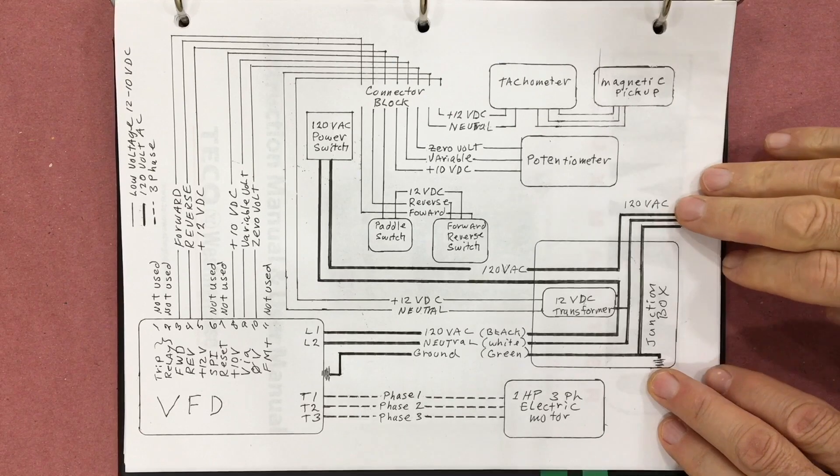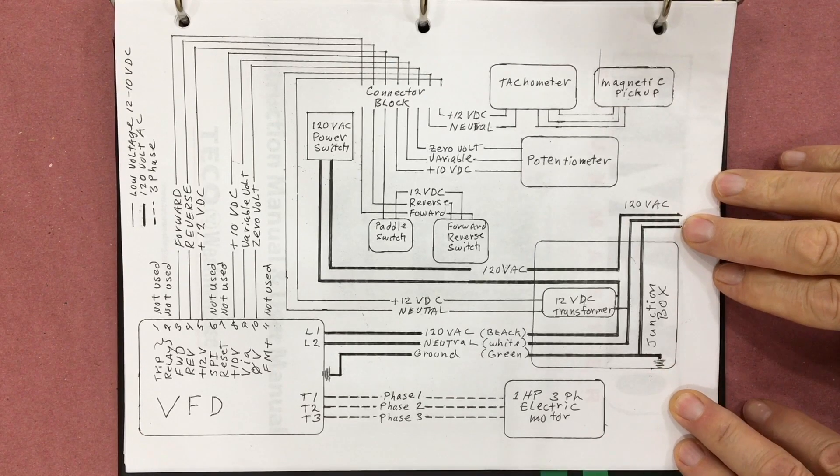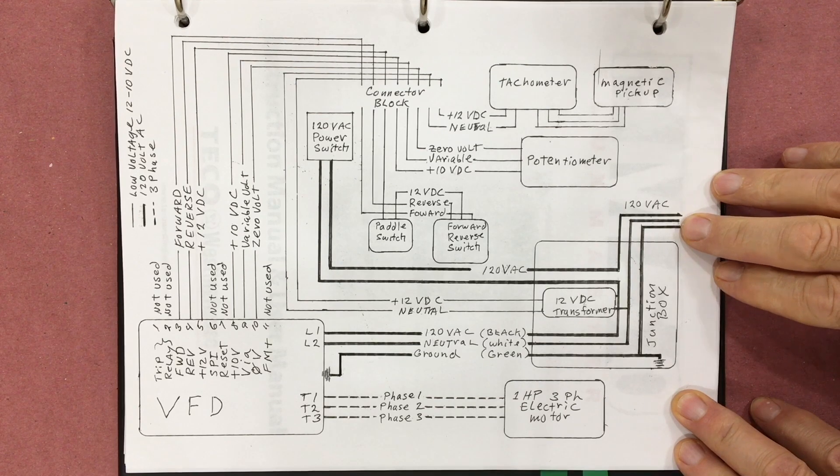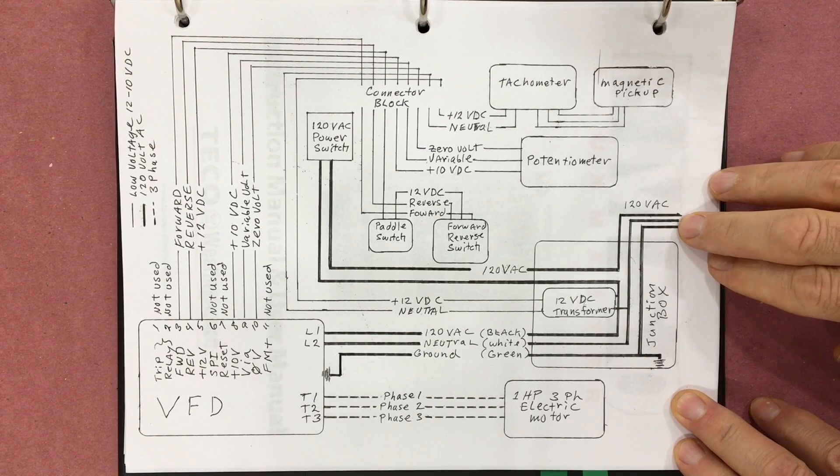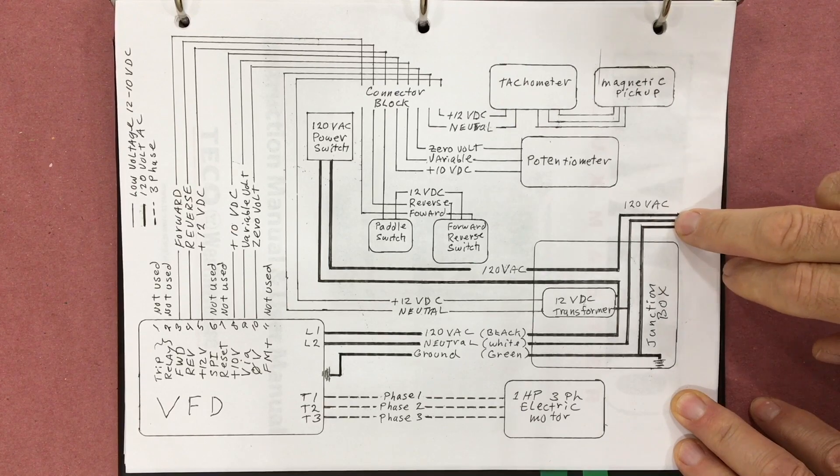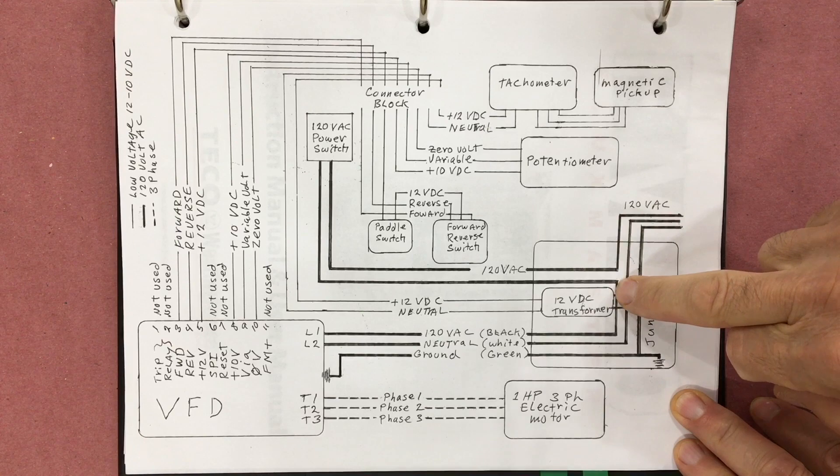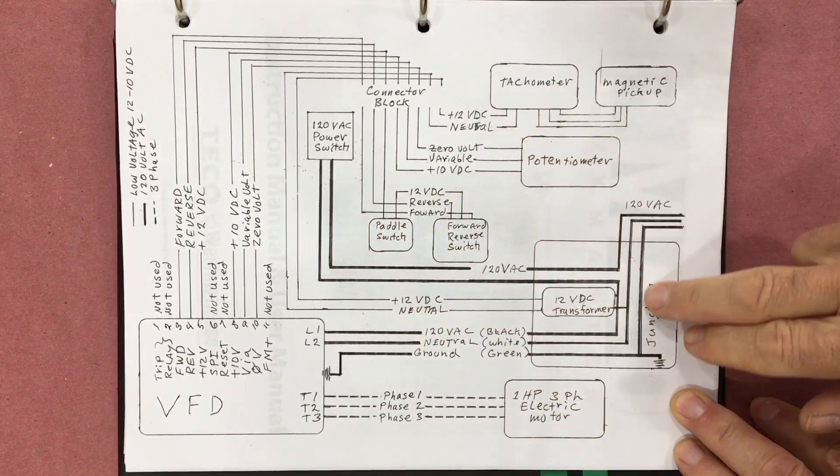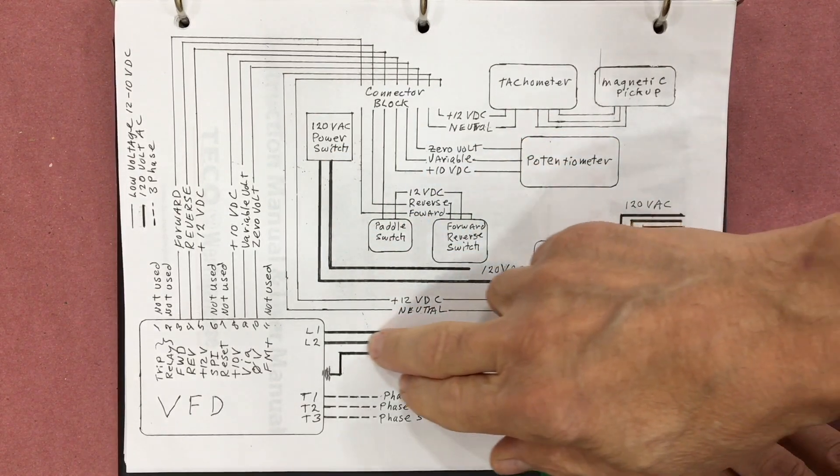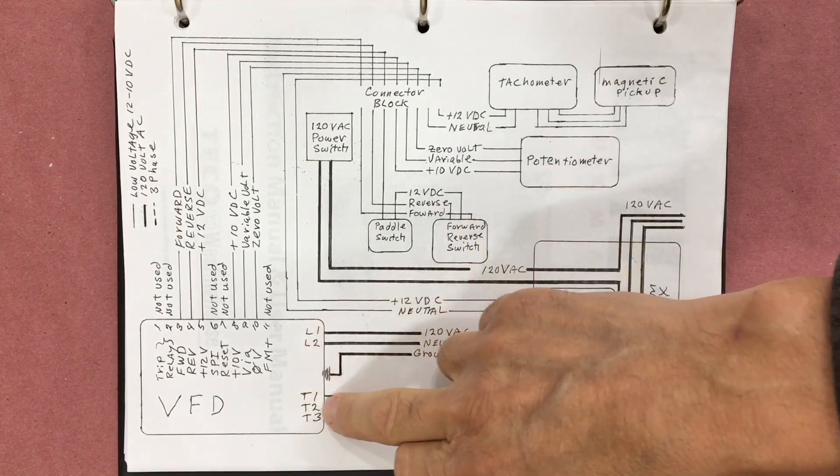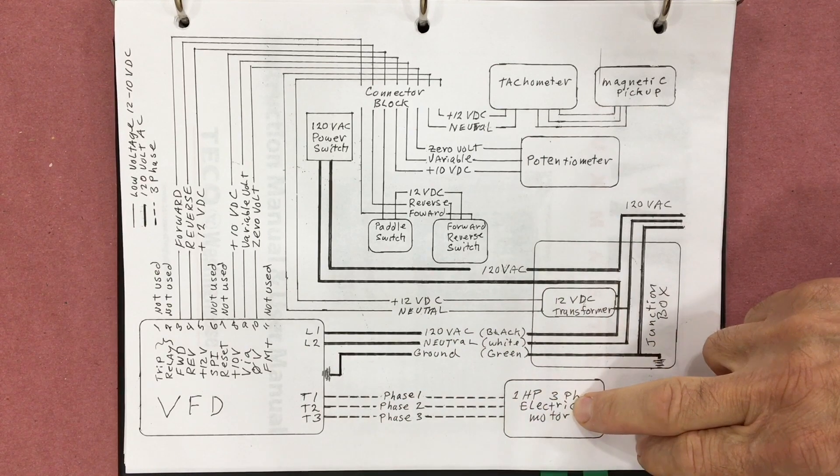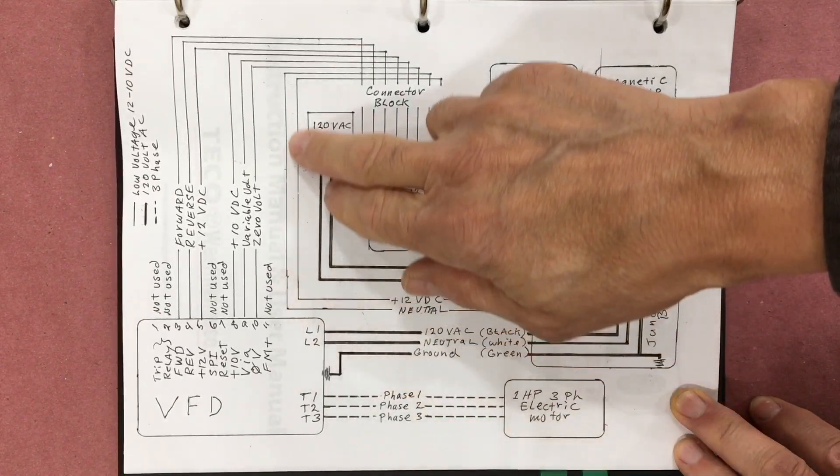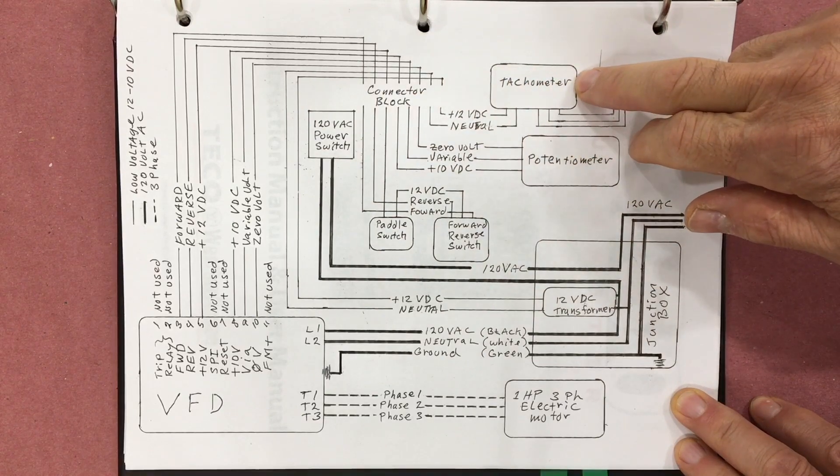For the last time I did a video like this, a lot of guys were asking for the wiring diagram. So I'll just take care of that now. The dark lines here are 120 volt AC. Everything else is the low voltage DC control circuits. 120 volt AC comes into a junction box and then the hot wire goes to a switch. And then it finally winds its way up to the VFD. Then the VFD transforms to three phase power and it goes to the motor. There is a 12 volt transformer coming off the AC power. And it's used to power the tachometer and the tachometer's pickup.